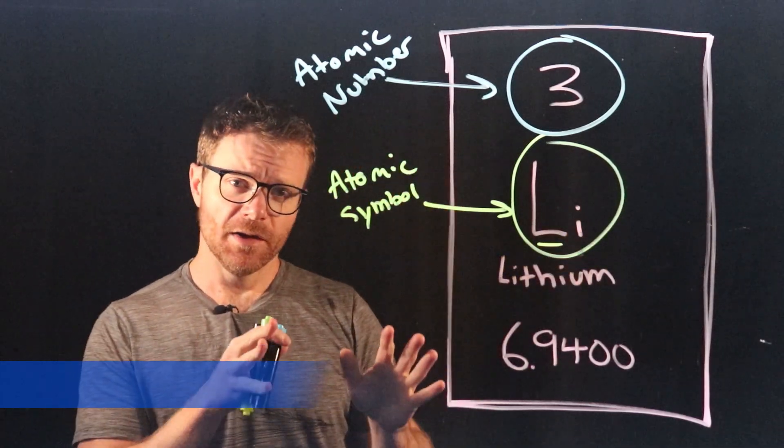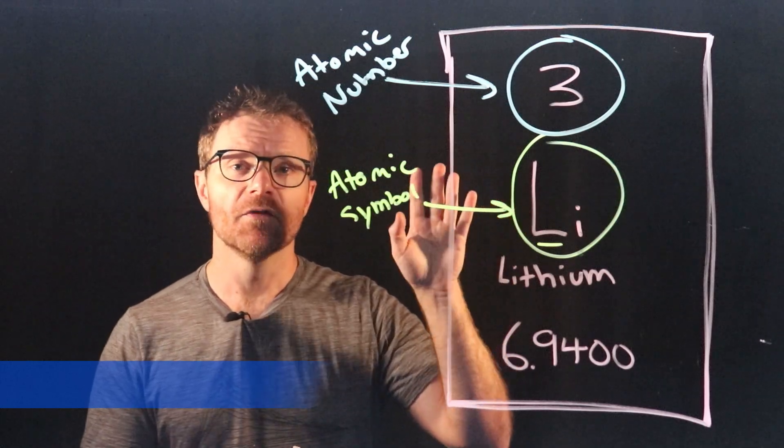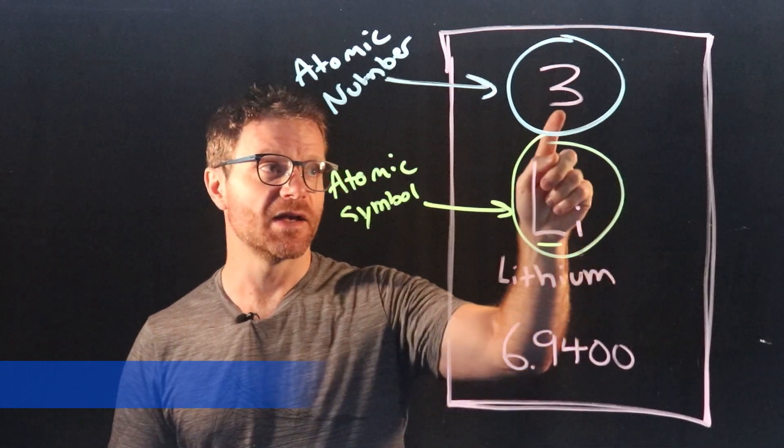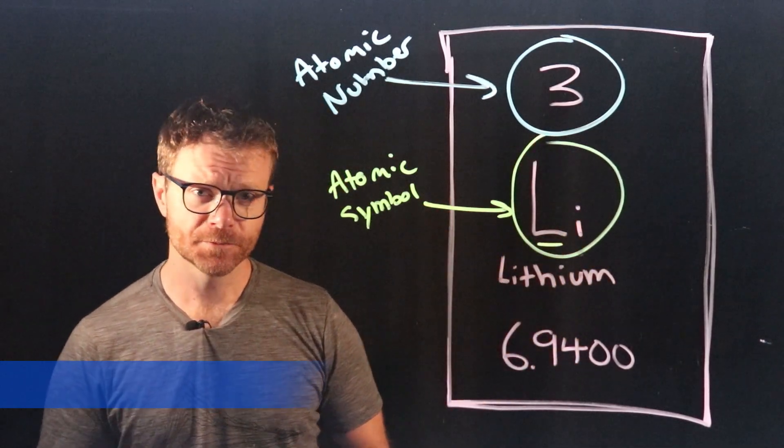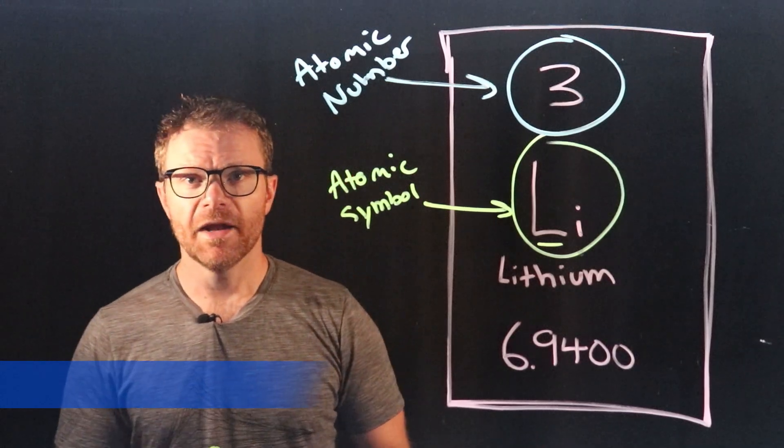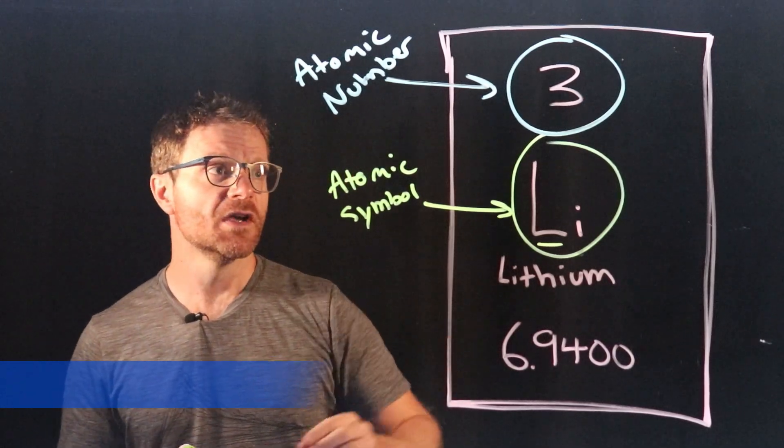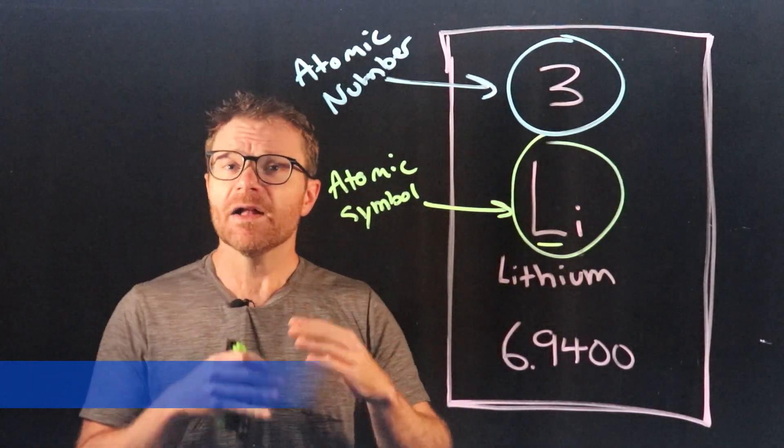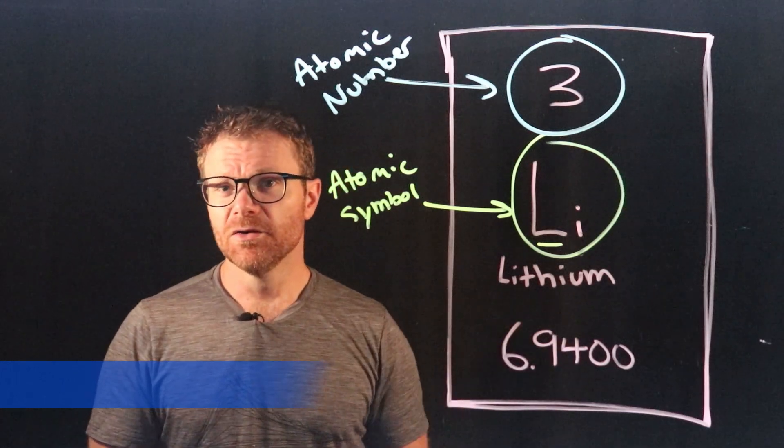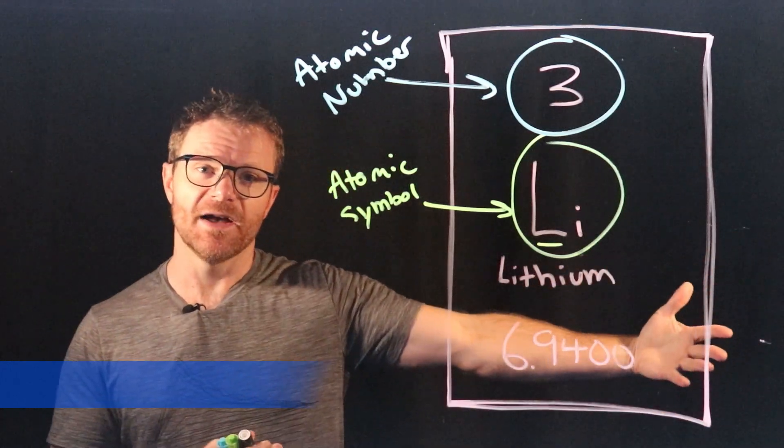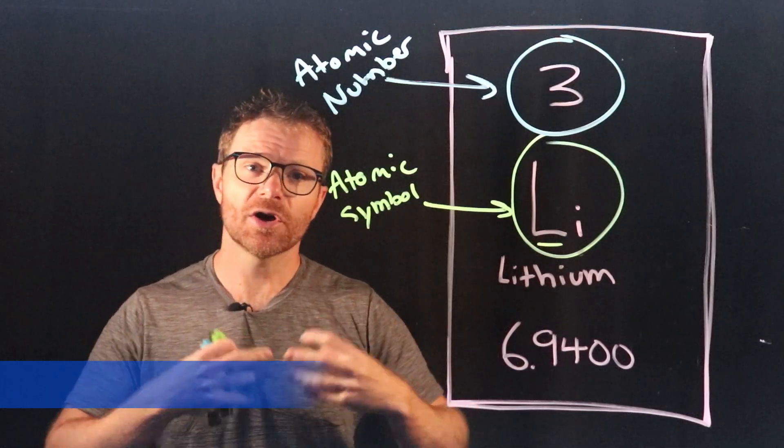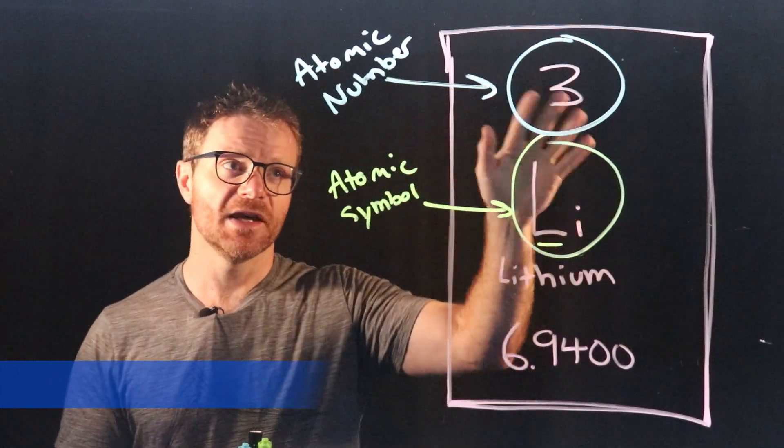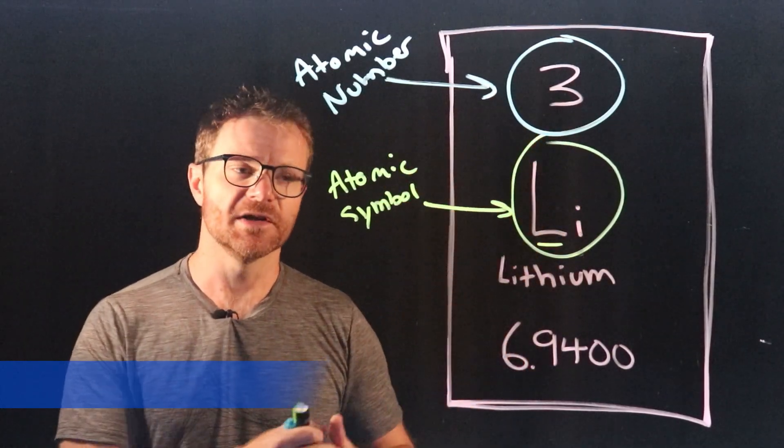The atomic number is very specifically the number of protons in one atom of that element. So a single lithium atom has three protons in its nucleus. Now you may be thinking that atoms have an equal number of protons and electrons, so you could say that this number is also the number of electrons in one atom of an element. And that's true if the element is in a neutral state. As you'll learn later on in your chemistry class, sometimes elements form ions, charged particles, by either giving up or gaining electrons. So it's much more reliable to just say that this is the number of protons in the nucleus of an atom.